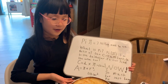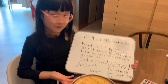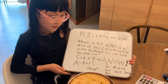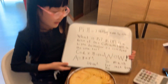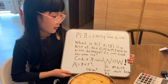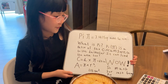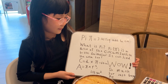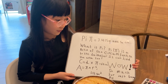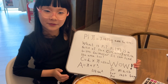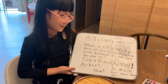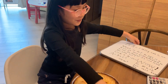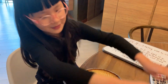Is it just a pie sitting in front of me? No. Pi is a ratio of the circumference to the diameter. You can find the area too. So much more than being a pie.